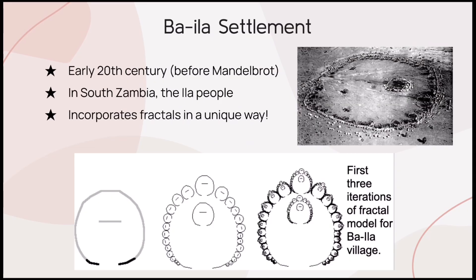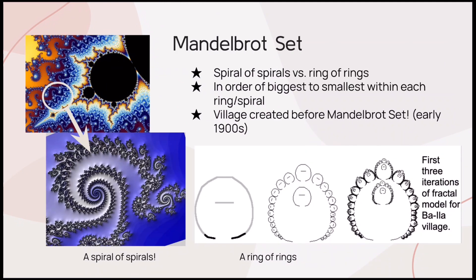Next up is the Ba'ila settlement in southern Zambia. This civilization is infamous for its village's ring-shaped configuration. From the aerial view, you can already see some sort of iteration going on, and it is definitely very different from Western architecture. Most primarily present in this design is the Mandelbrot set. If you zoom in on the spirals surrounding the Mandelbrot set, you will see a spiral consisting of smaller spirals going from larger size to smaller size. It's basically what is seen in the Ba'ila village, except it is a ring of rings instead of a spiral of spirals. The rings are lined up in descending order from the center.